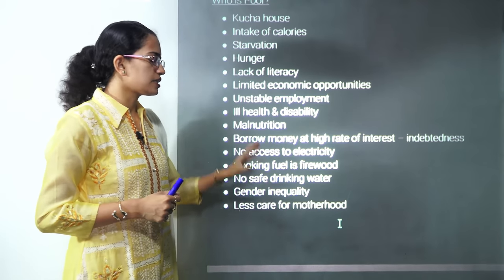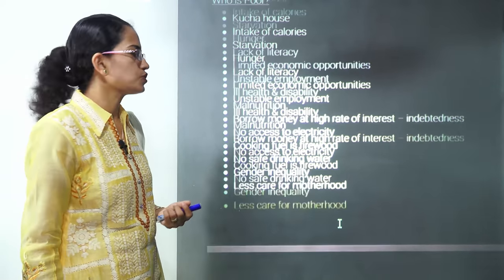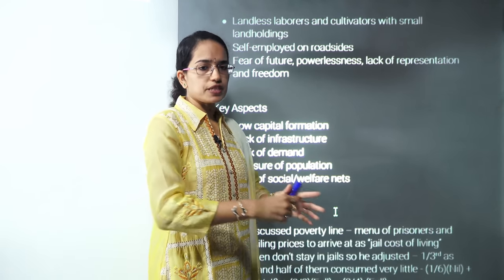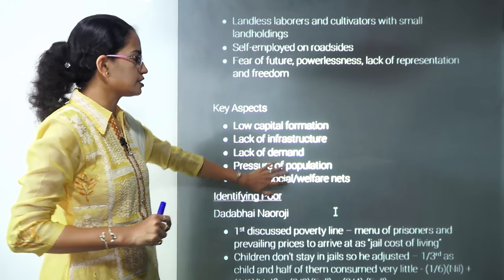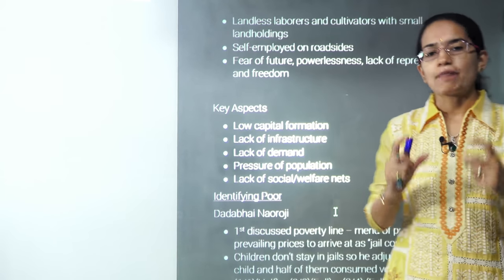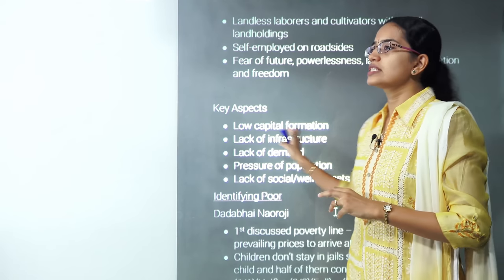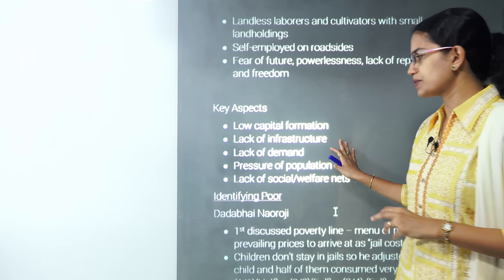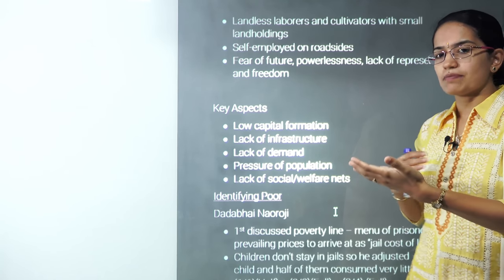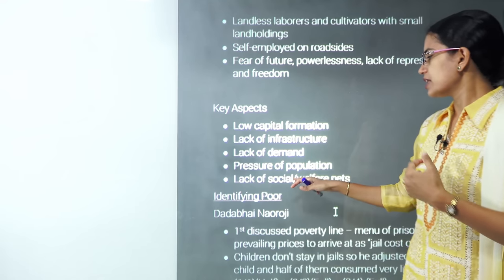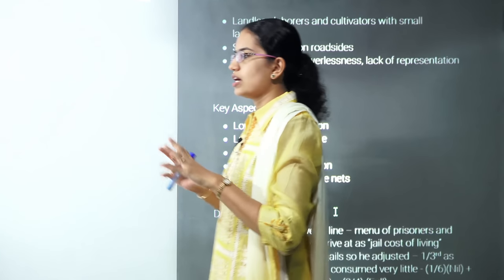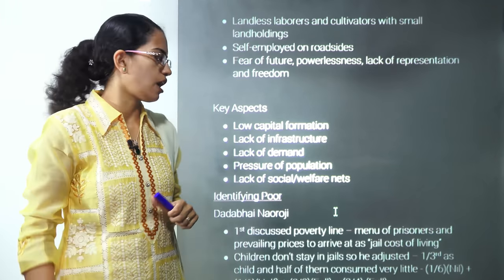When we look at the key aspects of poverty, there are five basic aspects. First, capital formation is very low. Second, there is a lack of infrastructure. Third, demand becomes very low because resources are insufficient. Fourth, there is high pressure of population. And fifth, the social net basically weakens out with poverty.